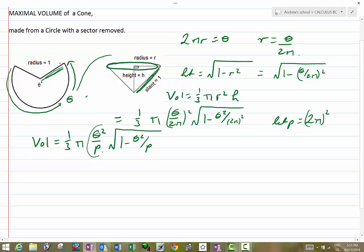So obviously it's a product, first and second. So dV by d theta is going to be 1 third pi, and then it's going to be the first times by the derivative of the second.